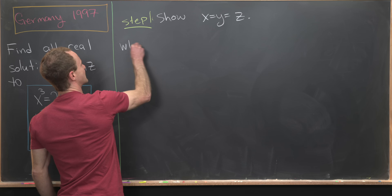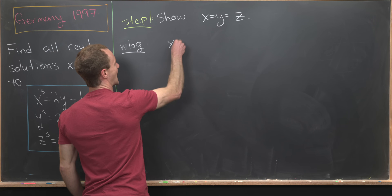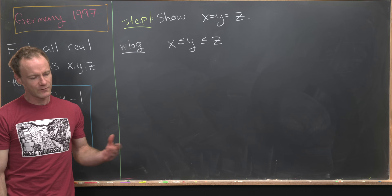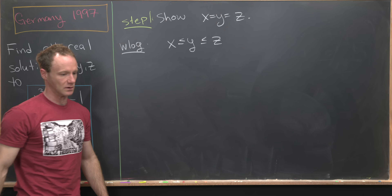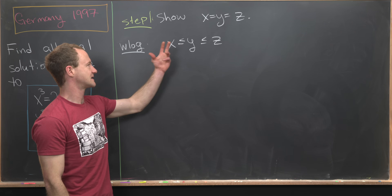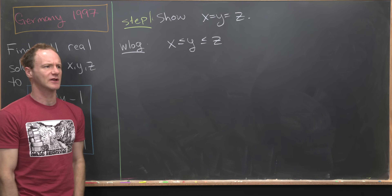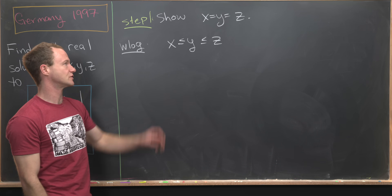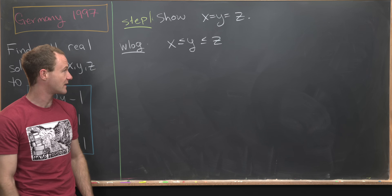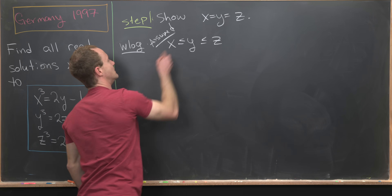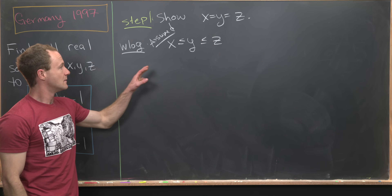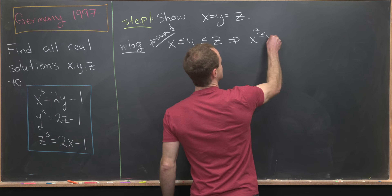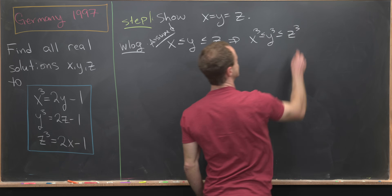Without loss of generality, assume that they're in some order: x is less than or equal to y, which is less than or equal to z. Now, if we indeed find a solution where they are not equal, then our solution will be when x is strictly less than y is strictly less than z. But like I hinted before, our solution will be when they are equal. Notice that we can cube this inequality to give us x cubed is less than or equal to y cubed is less than or equal to z cubed.